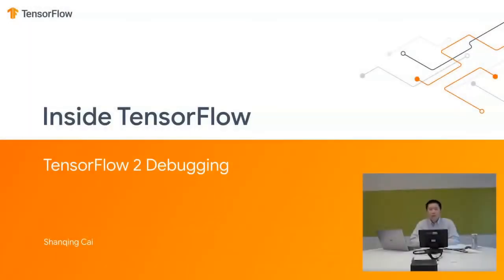We're going to do this presentation about how to debug TensorFlow programs. We're going to focus specifically on TF2 because TF2 is a stable release and it will have long-term support going forward. But there are also places where we're going to mention TF1, and when we do, we'll make that clear so you know which version of TensorFlow we're talking about.